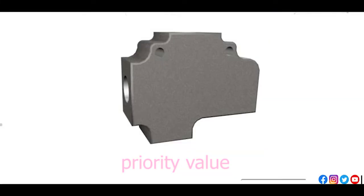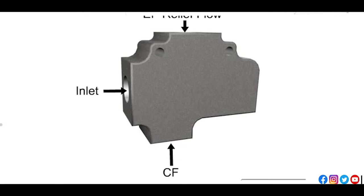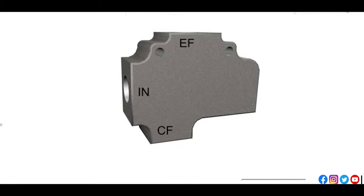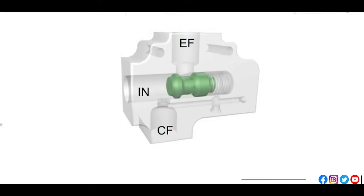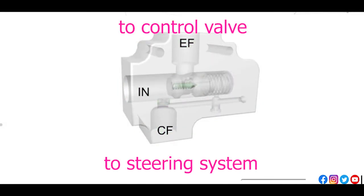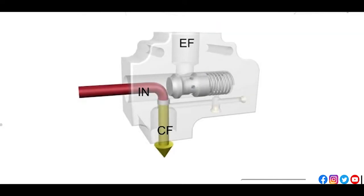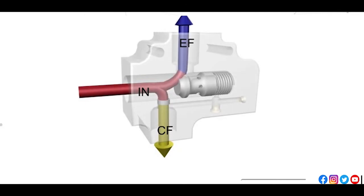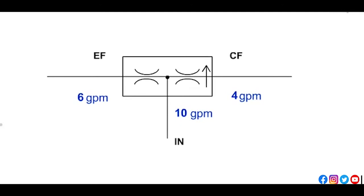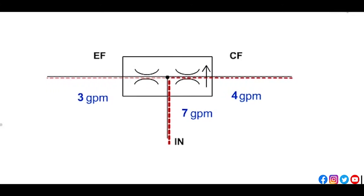The next component is the priority valve. It consists of three ports: inlet port, control flow port, and excess flow port. It mainly consists of a housing, main spool with metering orifice, spool biasing spring, and a relief valve. The metering orifice controls the amount of flow to the priority circuit, which is the steering circuit. When excess flow tries to pass through the orifice, the increased pressure pulls the spool and starts to flow to the excess flow port. The control flow port is pressure-compensated, but the excess flow port is not; all fluid first meets the demand at the control flow port and finally the excess flow port.